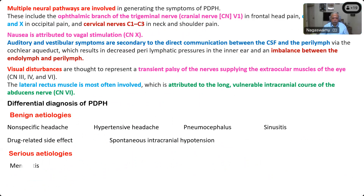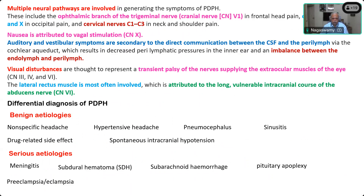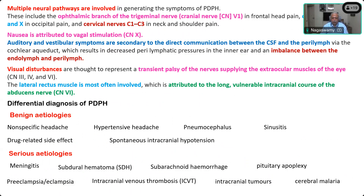At the same time, there are serious etiologies: meningitis, subdural hematoma, subarachnoid hemorrhage, pituitary apoplexy, and preeclampsia or eclampsia — patients with these conditions may also have a headache, so you should not mistake it for PDPH and ignore it. Intracranial venous thrombosis due to venodilatation, and pre-existing asymptomatic intracranial tumors that start exhibiting as headache — these are serious differentials. You can divide them as benign and serious etiologies. Cerebral malaria is a very rare differential diagnosis.